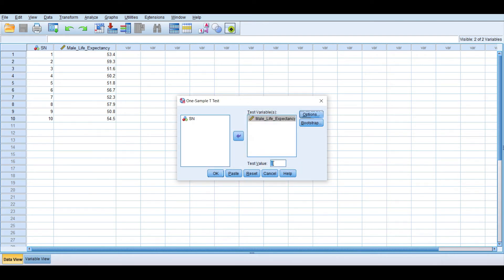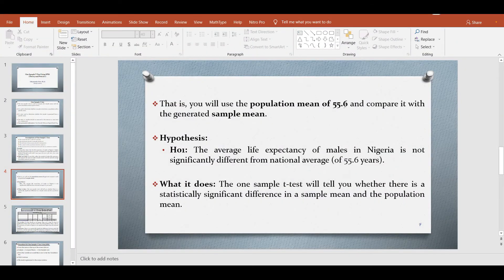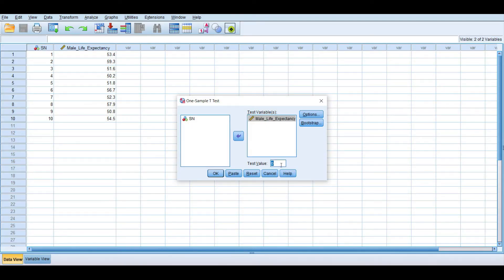Then under test value here, you put your population mean. What is our population mean? The population mean here is 55.6. So what we're going to type into this box here under this test value is 55.6. You delete this and type 55.6, then simply click okay.